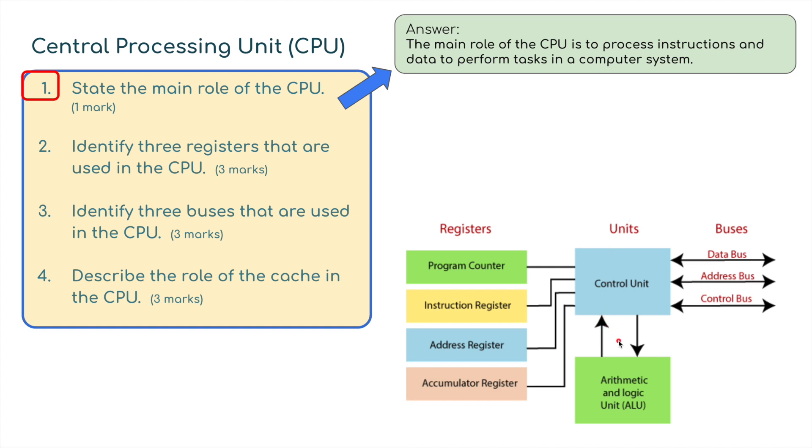Let's have a look at a diagram of the inside of a CPU. We've got the control unit and the arithmetic and logic unit. With that we've got several buses: the data bus, the address bus, the control bus, and several registers. Let's tackle the first one: state the main role of the CPU. The main role of the CPU is to process instructions and data to perform tasks in a computer system.